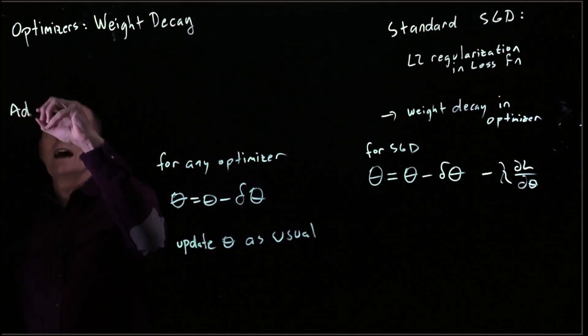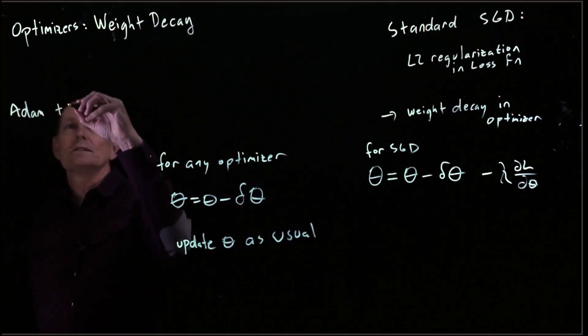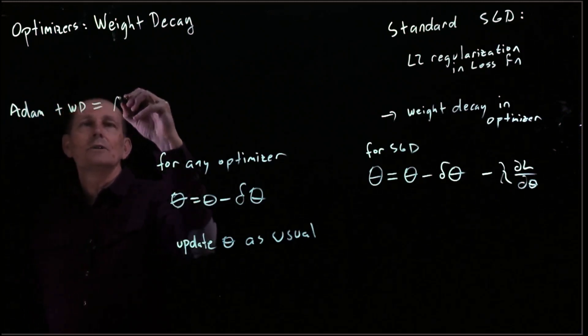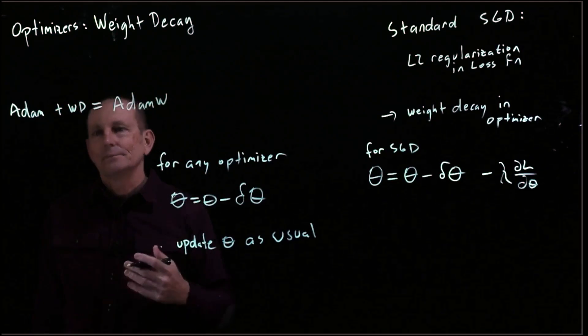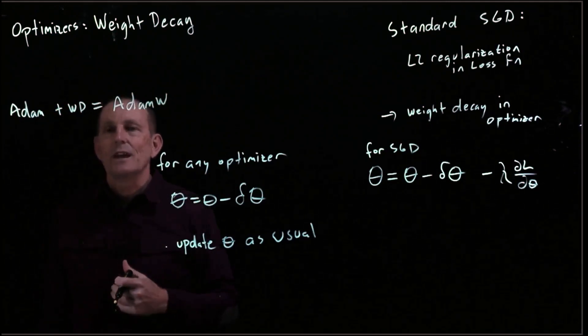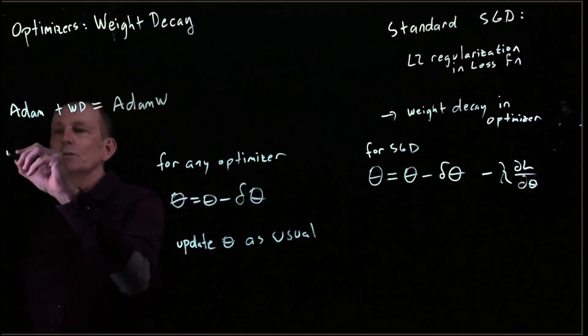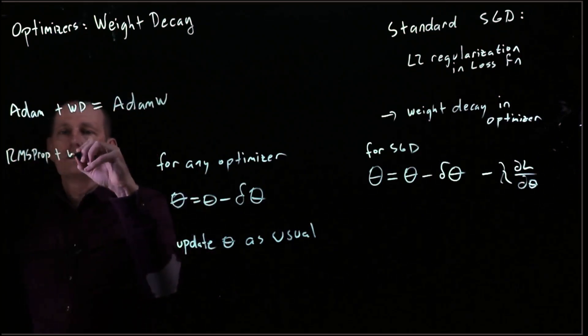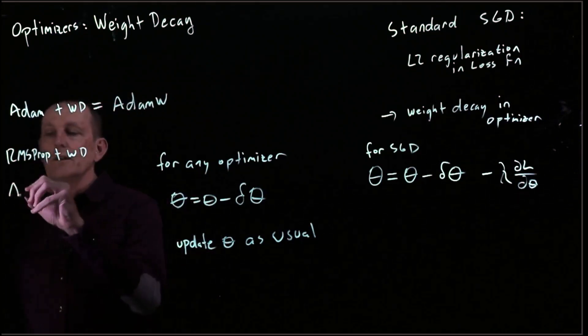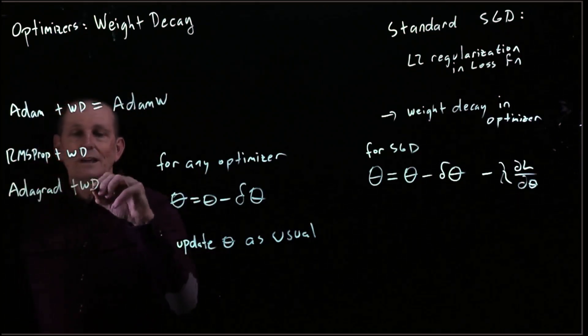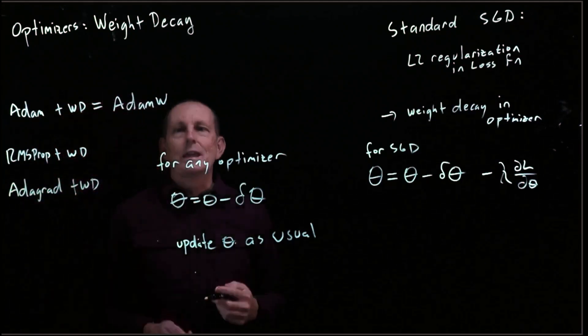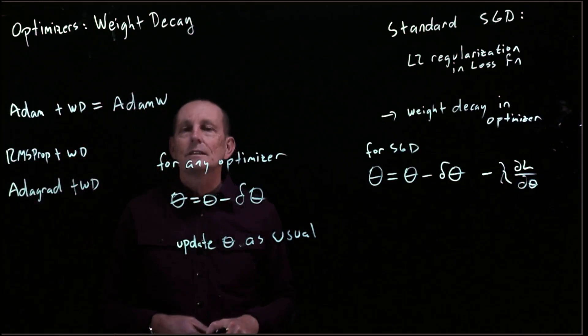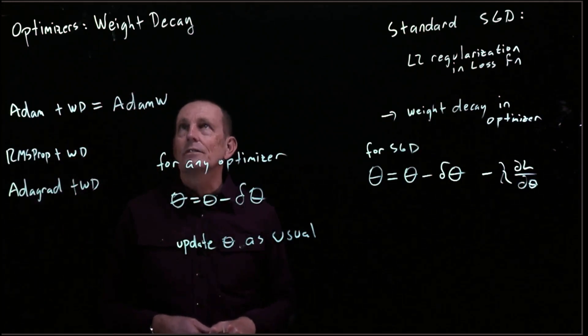For instance, Adam plus weight decay equals AdamW. That has a name. Some combinations don't have names, but they can. You could do RMSprop plus weight decay, or Adagrad plus weight decay. These don't have names - AdamW just happens to have one. These are all possibilities for adding weight decay.